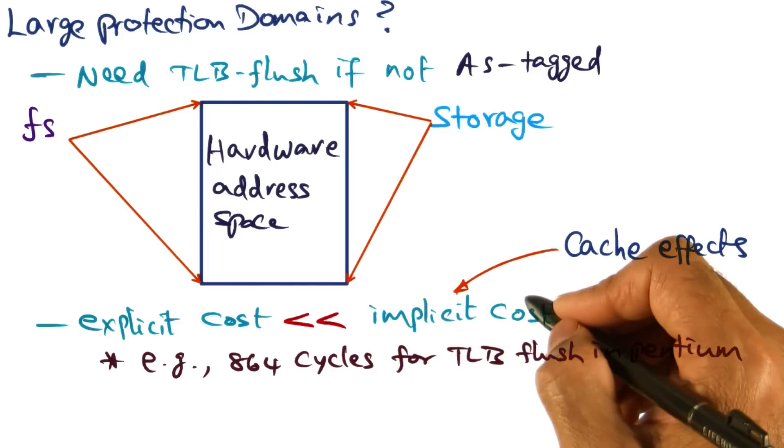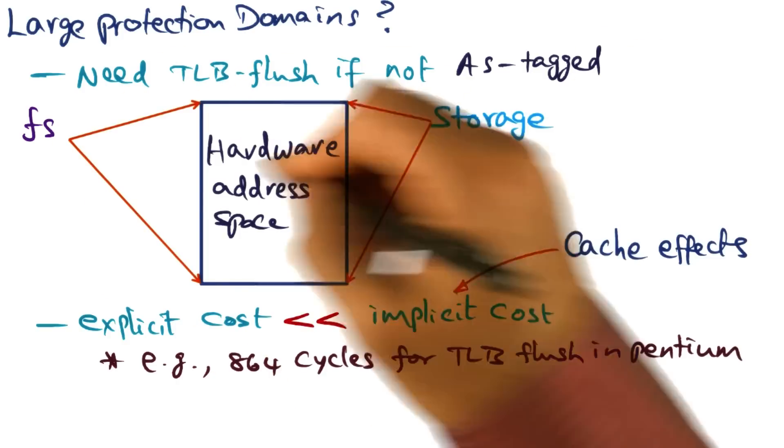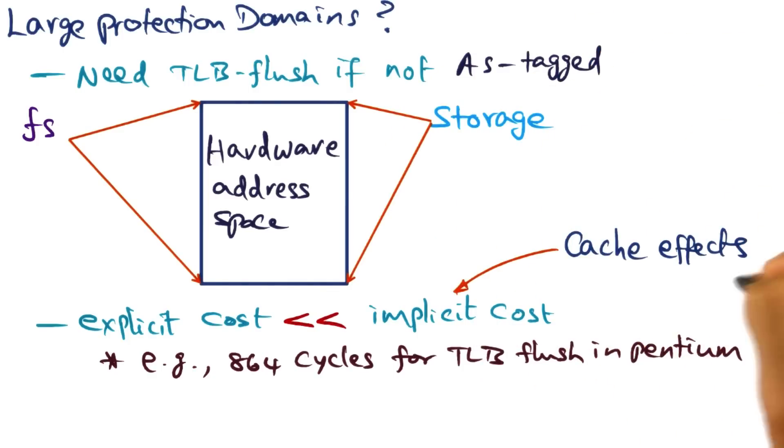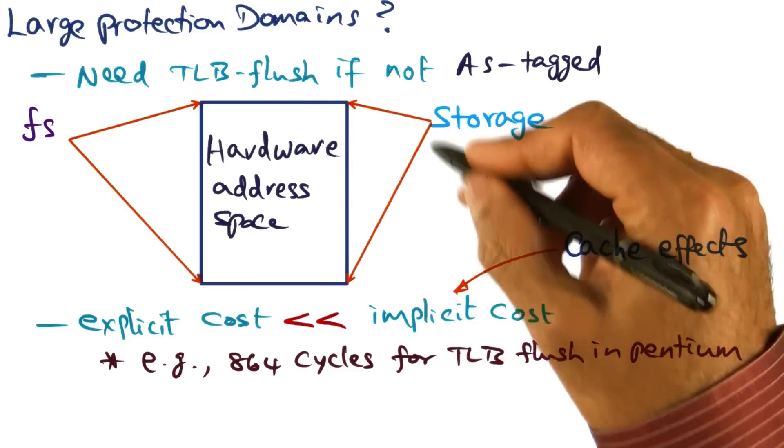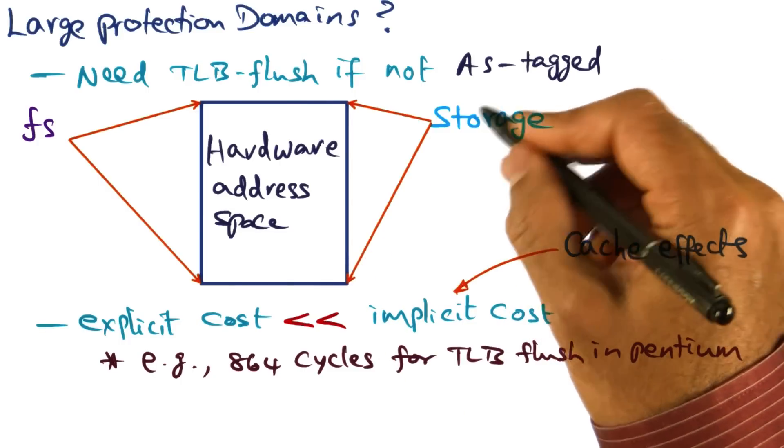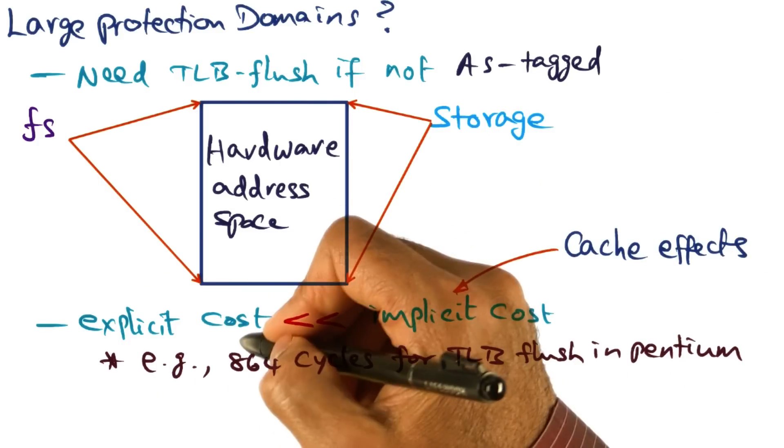But the loss of locality when a service goes from this to this, in terms of cache effects is going to be much more significant. Because with a large address space, you expect that you're doing more work in the subsystem, and the implicit costs are going to dominate.